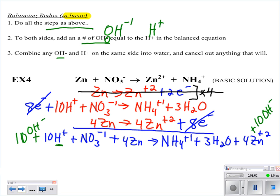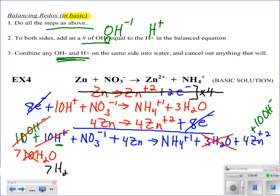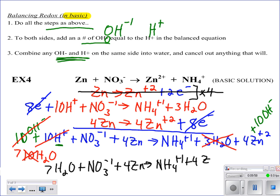Just like the rules tell us, if you add hydroxide ions and hydrogen ions together, that makes water — so the 10H⁺ and 10OH⁻ on the left become 10 waters. Since that cancels out and makes water, I look on the other side and I've got 3 waters there, so those go away, and the 10 becomes a 7. Everything's canceled, so I just add up what's left — don't forget those hydroxides on the right. Our final answer: 7H2O + NO3⁻ + 4Zn → NH4⁺ + 4Zn²⁺ + 10OH⁻. And that is it — that's all there is to it.